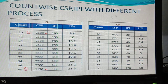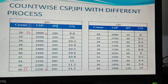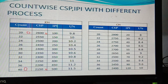Bismillahirrahmanirrahim, assalamu alaikum. Now I am going to discuss about CSP and IPA count-wise, a two-point process like com hushary and card hushary. I want to tell you something — let's start. I am going to mark the base count, and then the CSP and IPA and the unevenness I am going to show you in the video.